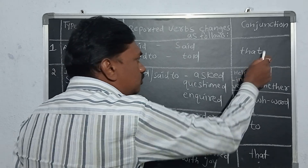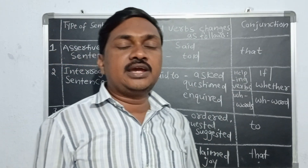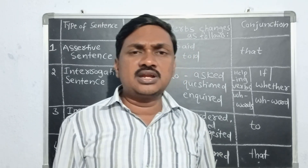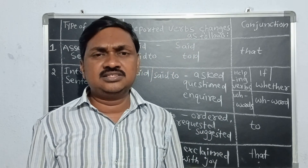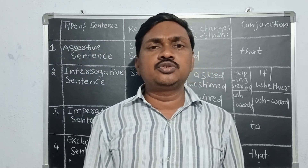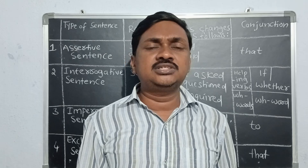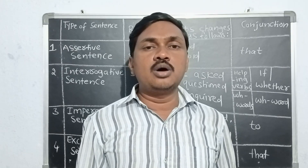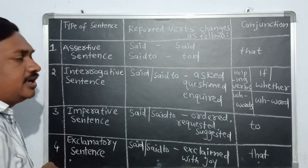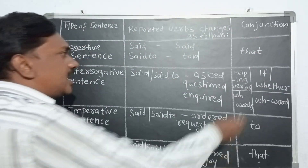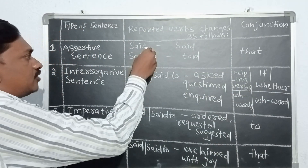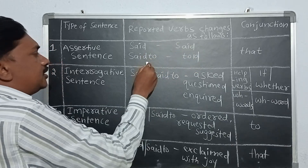We use a conjunction to combine the main clause and the subordinate clause. The basic changes while converting from direct speech into indirect speech: first, remove the comma and inverted commas, then write the conjunction to combine the main clause and subordinate clause. For assertive sentences, we use the conjunction 'that'. The reported verb 'said' remains 'said', and 'said to' becomes 'told'.